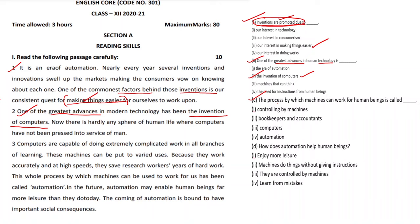Question C: 'The process by which machines can work for human beings is called.' So we need the name of this process. Let us read the third paragraph: 'Computers are capable of doing extremely complicated work in all branches of learning. These machines can be put to varied uses because they work accurately and at high speeds. The whole process by which machines can be used to work for us has been called automation.' So we choose the option 'automation' — without reading the other options, we can find the exact answer.